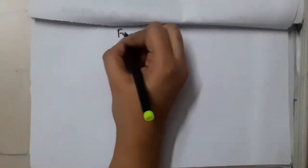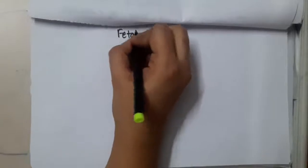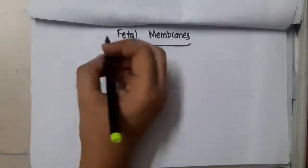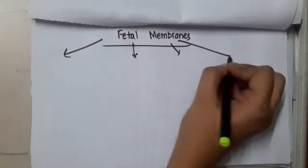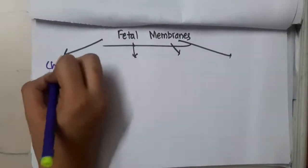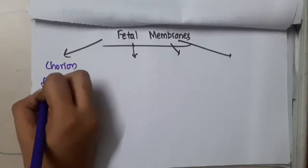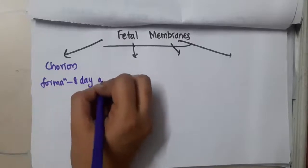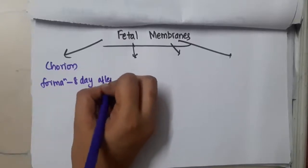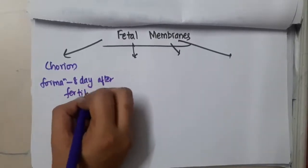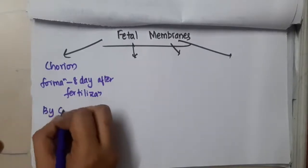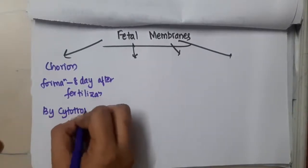Let us now learn some important points about fetal membranes. Fetal membranes have four important parts. First, we have chorion — this is formed at the eighth day after fertilization, and it is formed by cytotrophoblast.